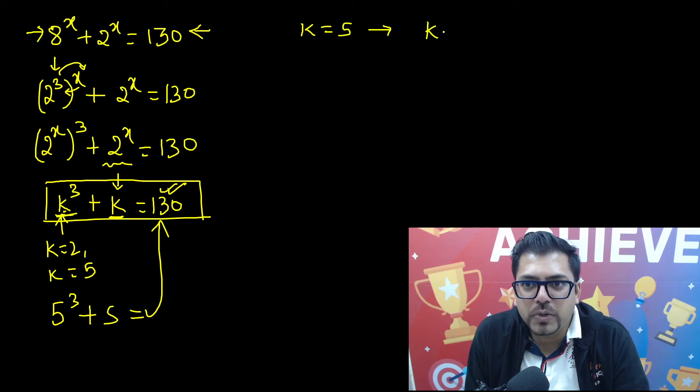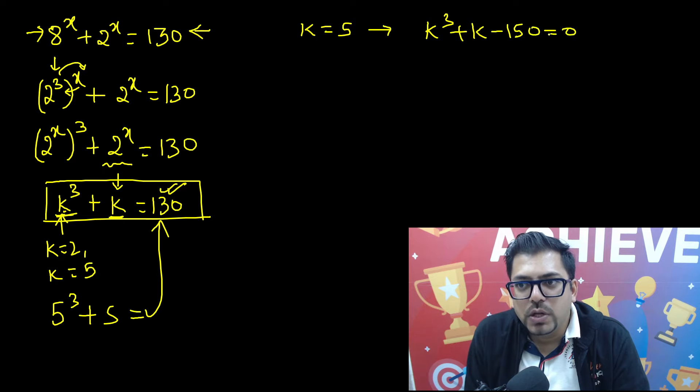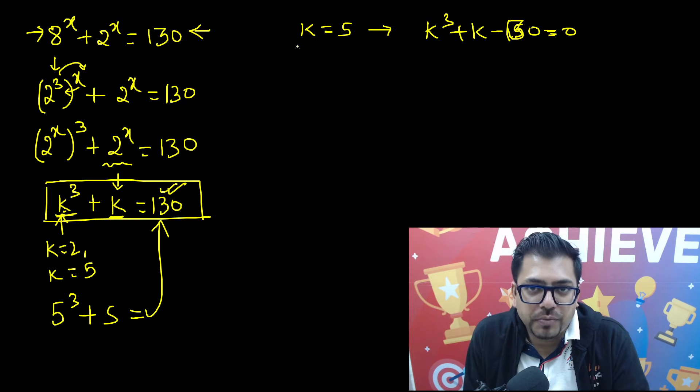Now once we have got k equals 5 for this polynomial k cube plus k minus 130 equals 0, we need to take the factor k equals 5 is the zero, so k minus 5 will be the factor.